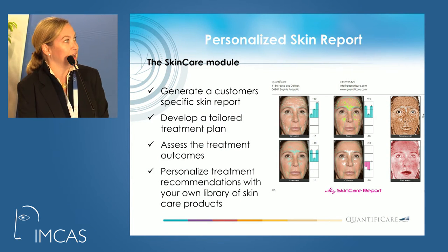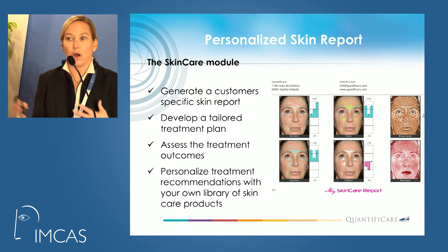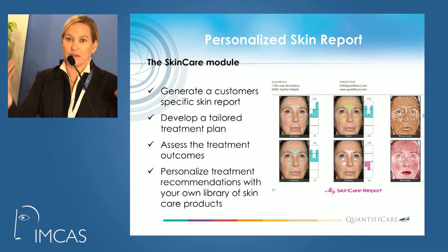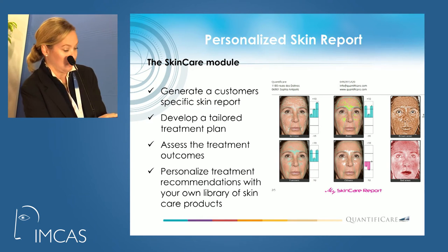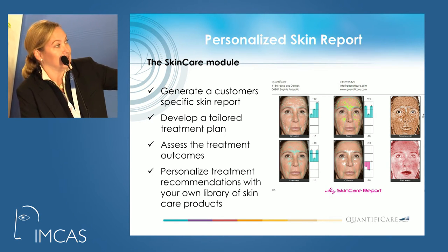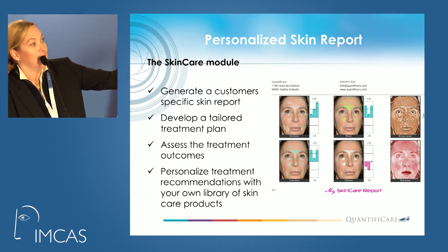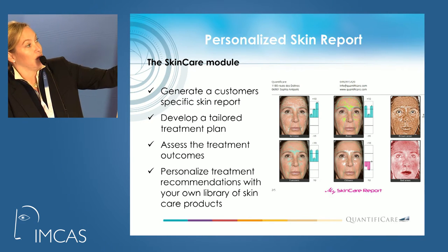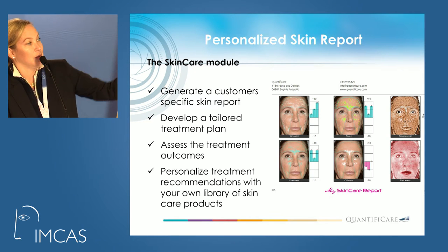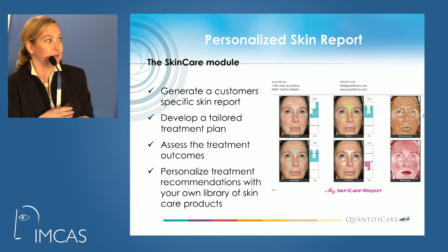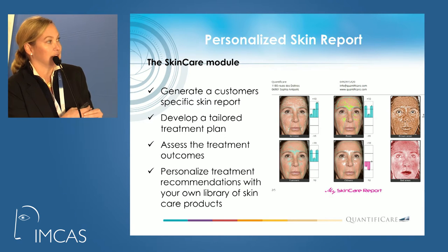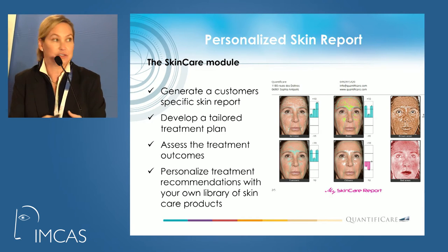It'll generate a customer-specific skin report. If we're doing a study, we just use the pictures as is, but you can put them into the system and come up with a report of how well a patient's doing — fine lines and wrinkles, a wrinkle score, an evenness score, pigmentation, pores, and also erythema. A lot of times when you look with a regular camera system, it's very hard to evaluate pigment and erythema, and of course the depth of wrinkles is almost impossible in a 2D image.